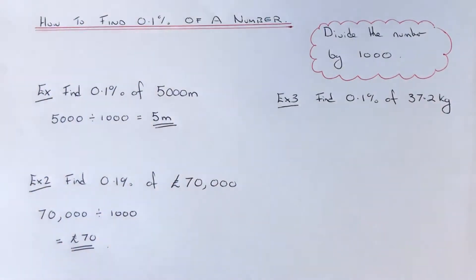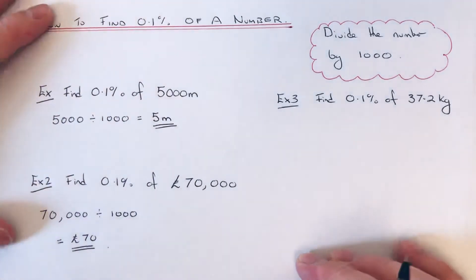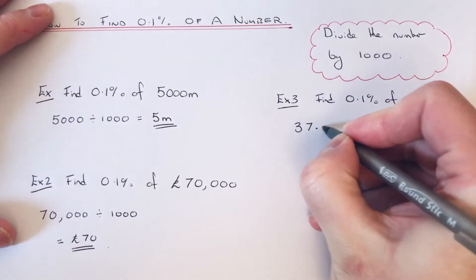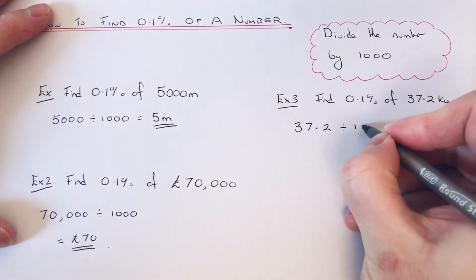Let's have a look at our final example. We've got to do 0.1% of 37.2, so we've got to do 37.2 divided by 1,000.